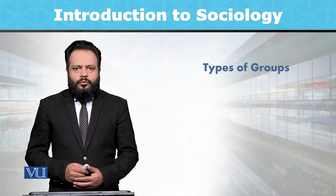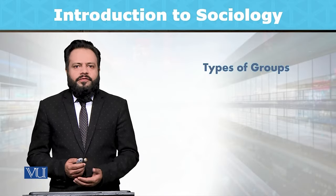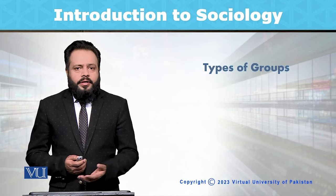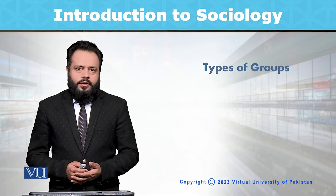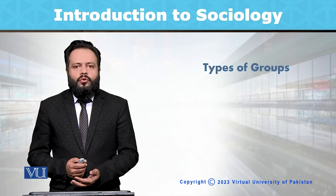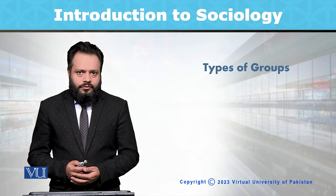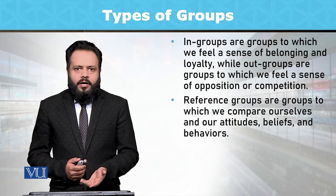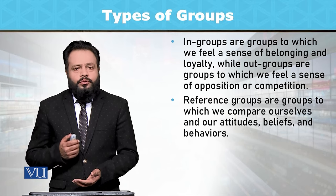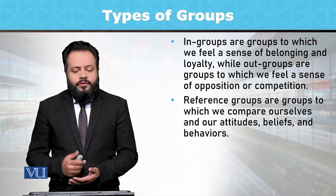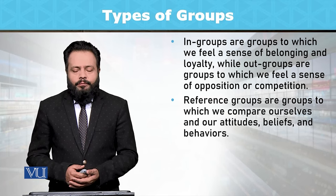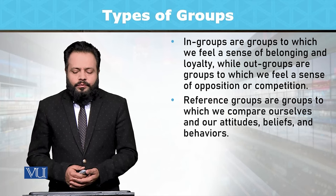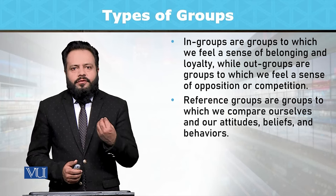Dear students, in this module we are going to talk about different types of groups. We have already talked about primary and secondary groups; however, apart from these two classifications there are some other classifications as well. For example, in-groups and out-groups. In-groups refer to the groups in which we feel a sense of belonging and loyalty, while out-groups are the groups in which we feel a sense of opposition and competition.